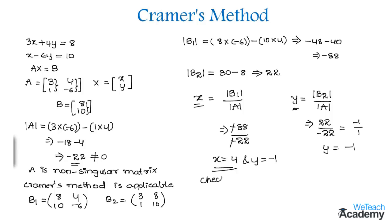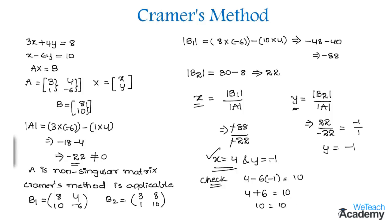Now let us check whether these values satisfy the equations. Using the second equation, substituting x = 4 and y = -1: 4 - 6 × (-1) = 10. That gives 4 + 6 = 10, so 10 = 10. Hence we can confirm that x = 4 and y = -1 are the solutions of these linear equations.